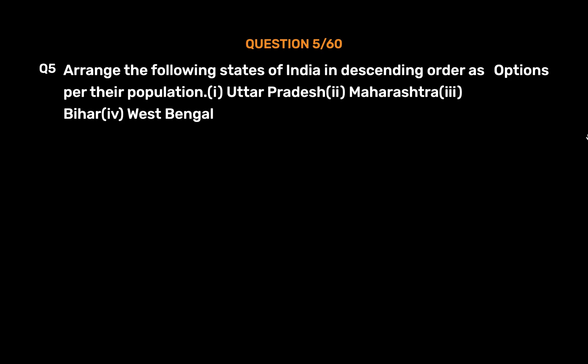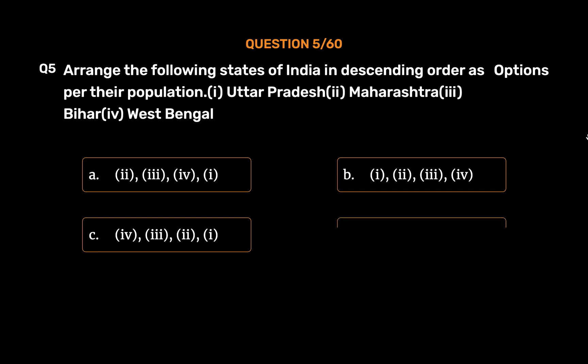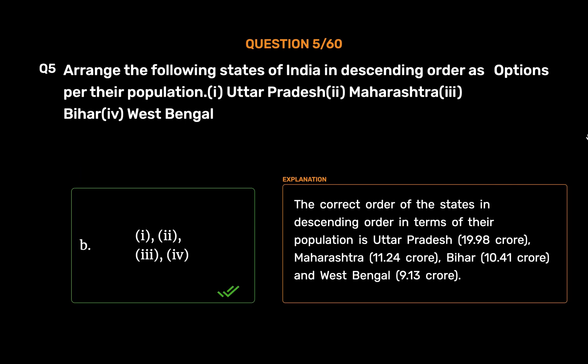Question number 5: Arrange the following states of India in descending order as per their population — 1: Uttar Pradesh, 2: Maharashtra, 3: Bihar, 4: West Bengal. Options: option A: 2,3,4,1; option B: 1,2,3,4; option C: 4,3,2,1; option D: 2,4,1,3. The correct answer is option B, 1,2,3,4. The correct order in descending population is Uttar Pradesh (19.98 crore), Maharashtra (11.24 crore), Bihar (10.41 crore), and West Bengal (9.13 crore).